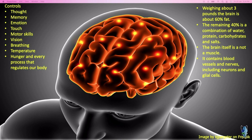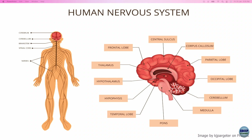The brain itself is not a muscle. It contains blood vessels, nerves, neurons, and glial cells. The human nervous system — including the cross section of your brain — has different lobes: the hypothalamus, midbrain, and hindbrain which is your cerebellum.